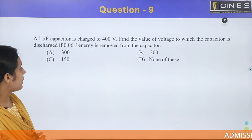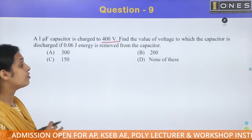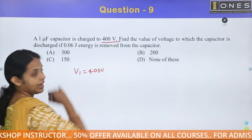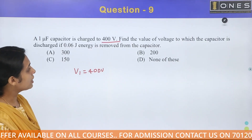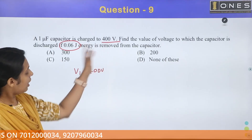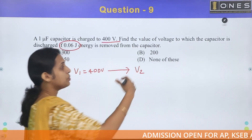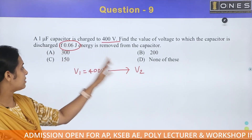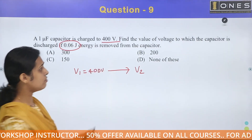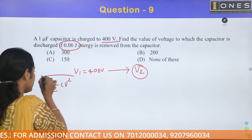Next question, ninth question. A 1 μF capacitor is charged to 400 V. Find the value of voltage to which the capacitor is discharged if 0.06 J of energy is removed from the capacitor. Initially, the capacitor is charged to V1 equals 400 V. After discharging, V2 is the voltage we need to find. Energy stored in a capacitor is equal to half C V squared.